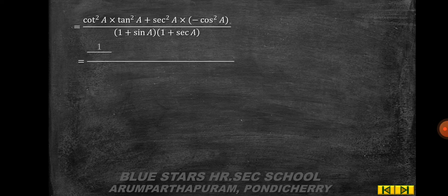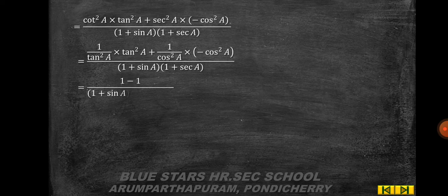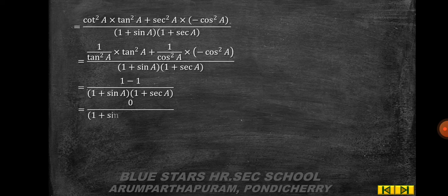This equals cot²a · tan²a + sec²a · (−cos²a), divided by (1 + sin a)(1 + sec a). Writing cot²a as 1/tan²a and sec²a as 1/cos²a, we cancel tan²a and cos²a to get 1 − 1 = 0, divided by (1 + sin a)(1 + sec a), which equals 0.